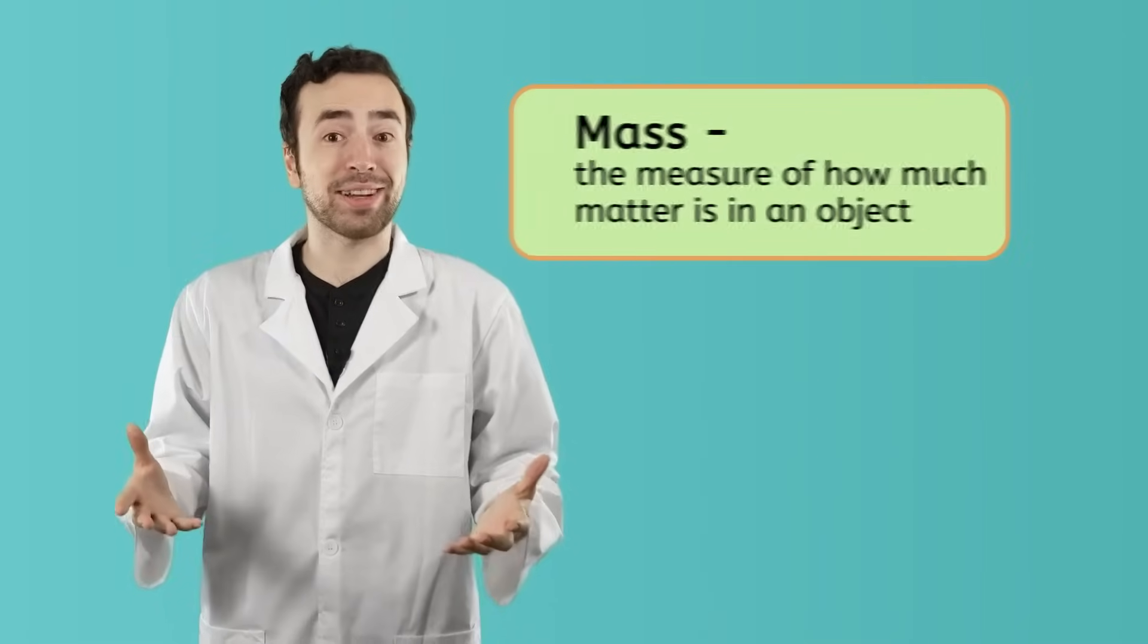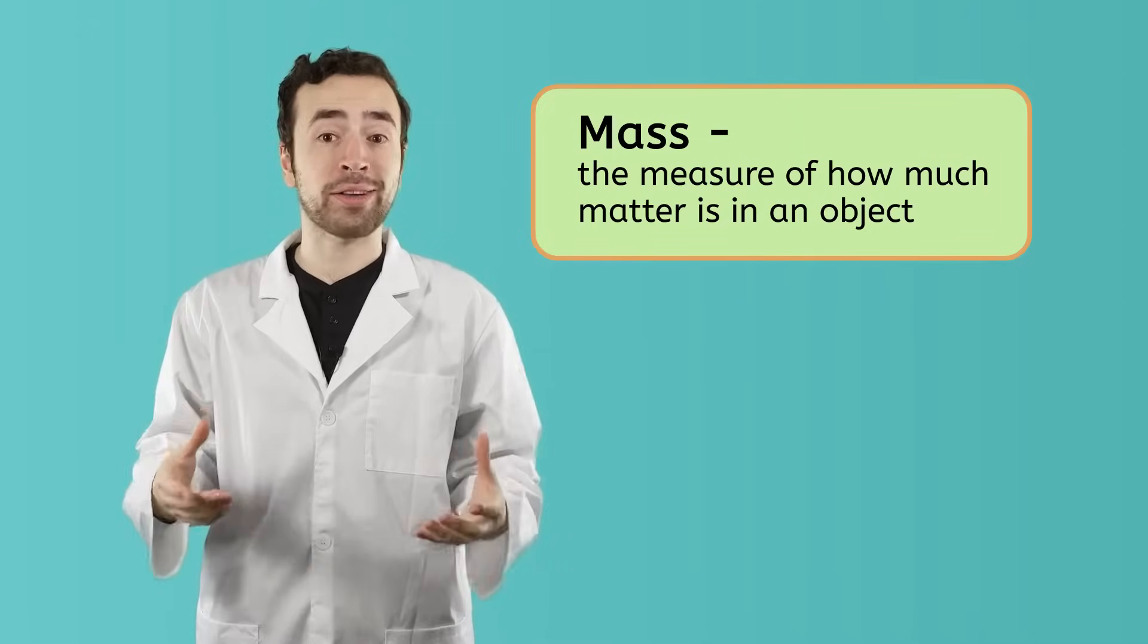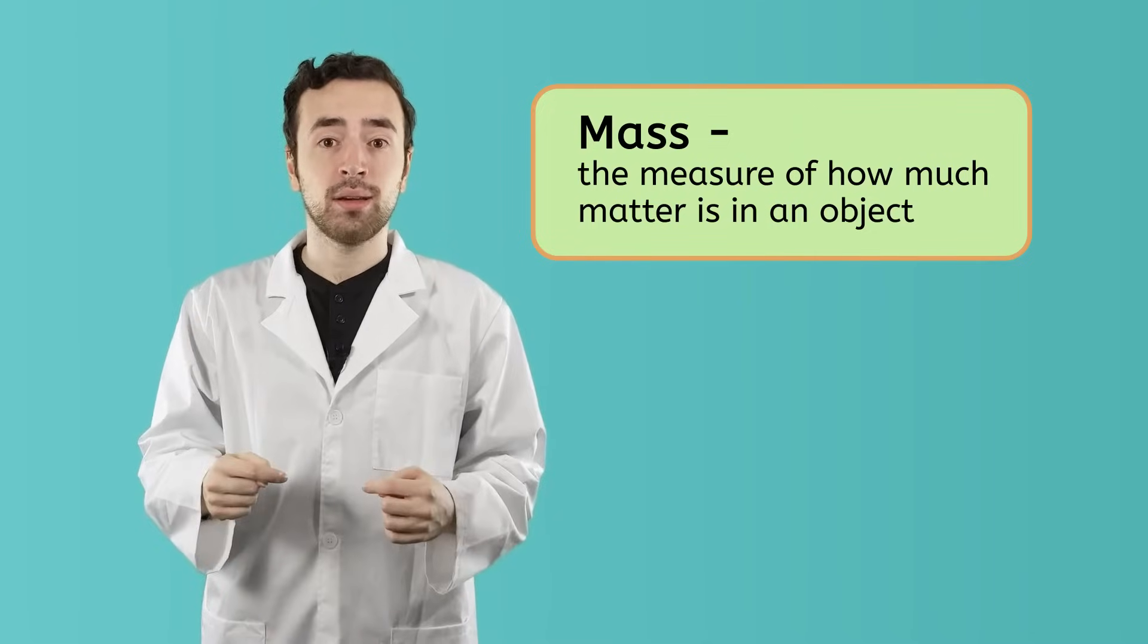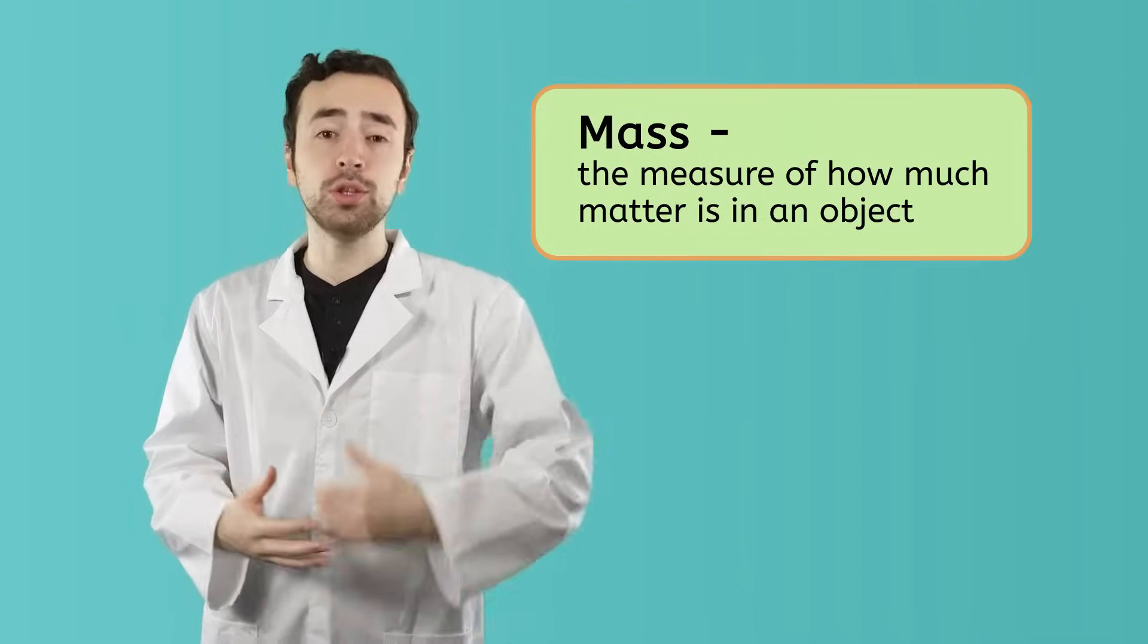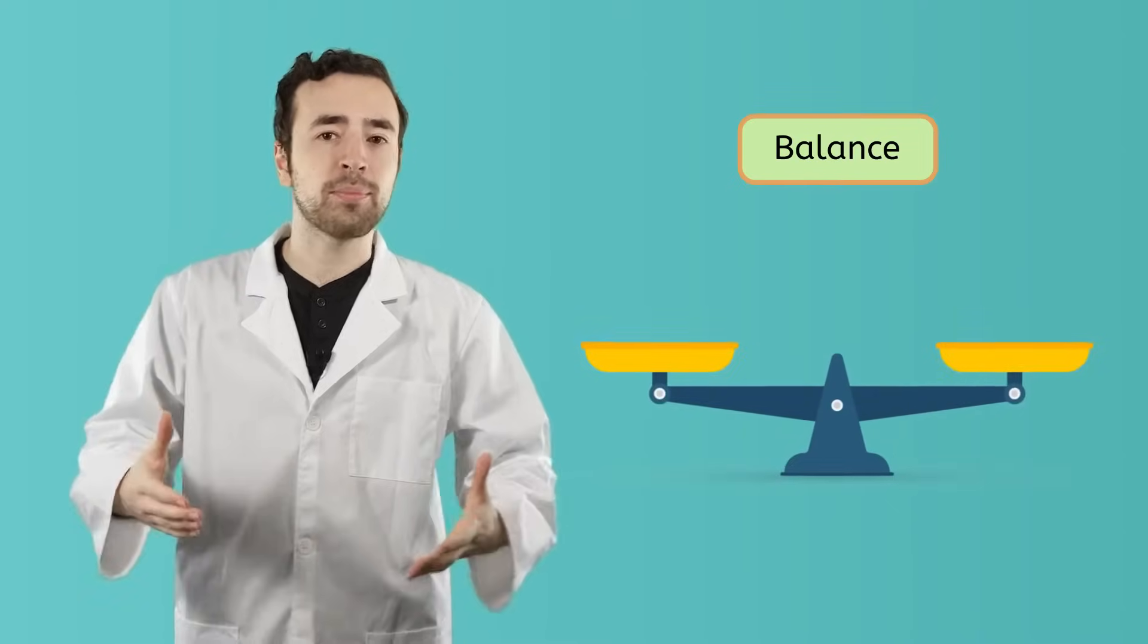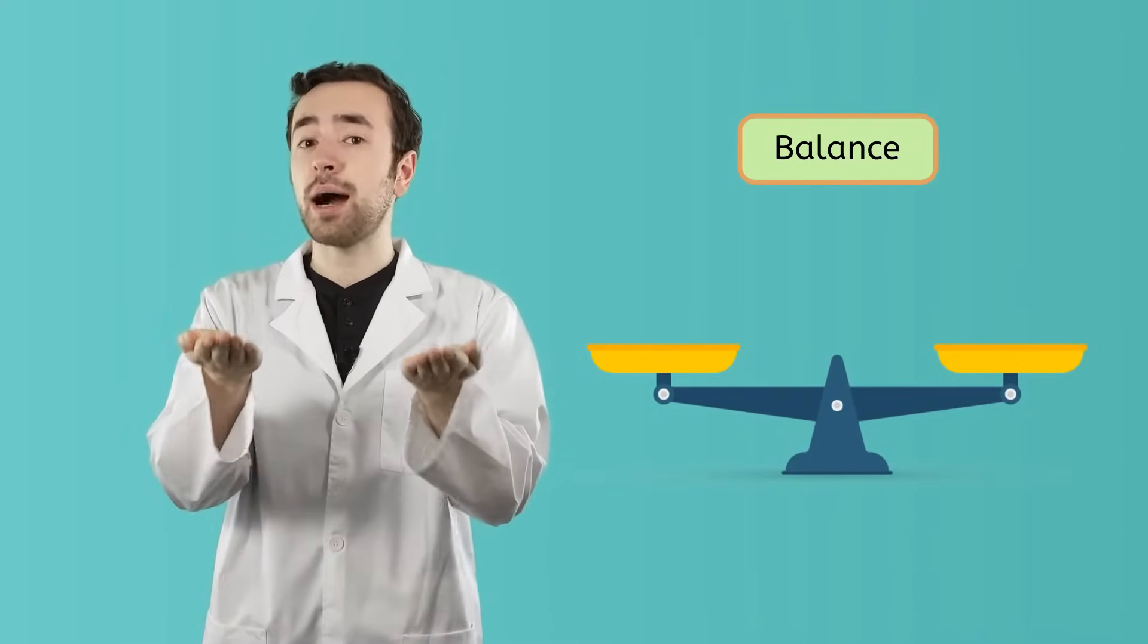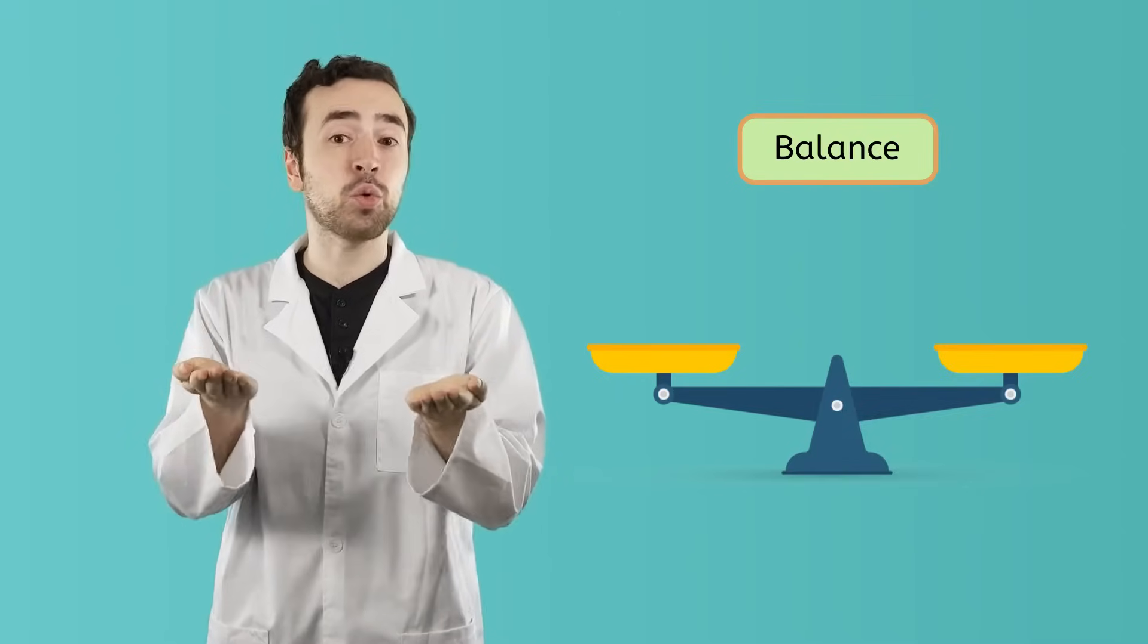We already know about one of the ways to measure matter: mass. Remember, mass is a measure of how much matter is in an object. There are several tools we can use to measure mass. One that we've already seen is a balance. A balance can be used to measure the mass of objects through comparison. For example, if both sides of a balance are equal, then we know that the objects on either side have an equal mass.